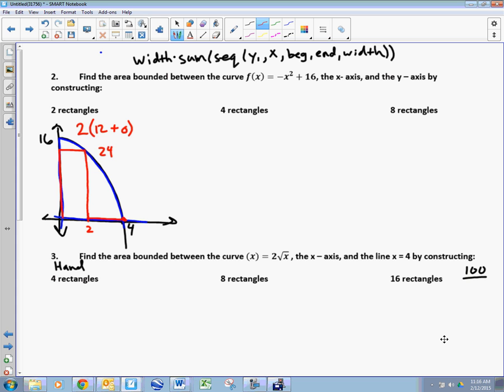We get 24. Is that an underestimation or an overestimation overall? It's a very low estimation. Under. We'll do it again. We'll do four rectangles.